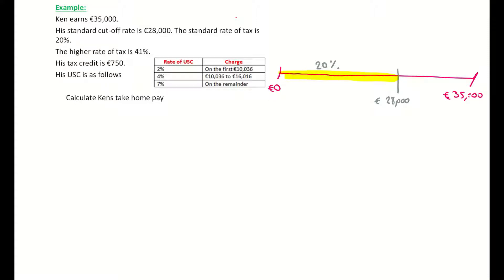On the balance of his earnings — highlighted in purple — the amount from 28,000 up to 35,000, which is 7,000 euro, Ken is going to pay tax at the higher rate of 41 percent. So there are two tax bands here that we must look at.